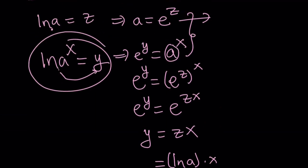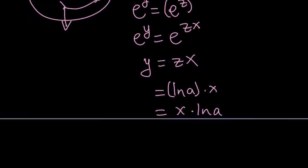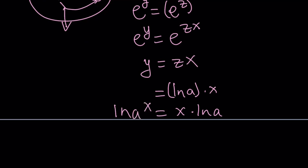But remember what y was. Y was ln a to the x. Therefore, we just proved that ln a to the x is the same as x times ln a. And that is the property we used for this problem.